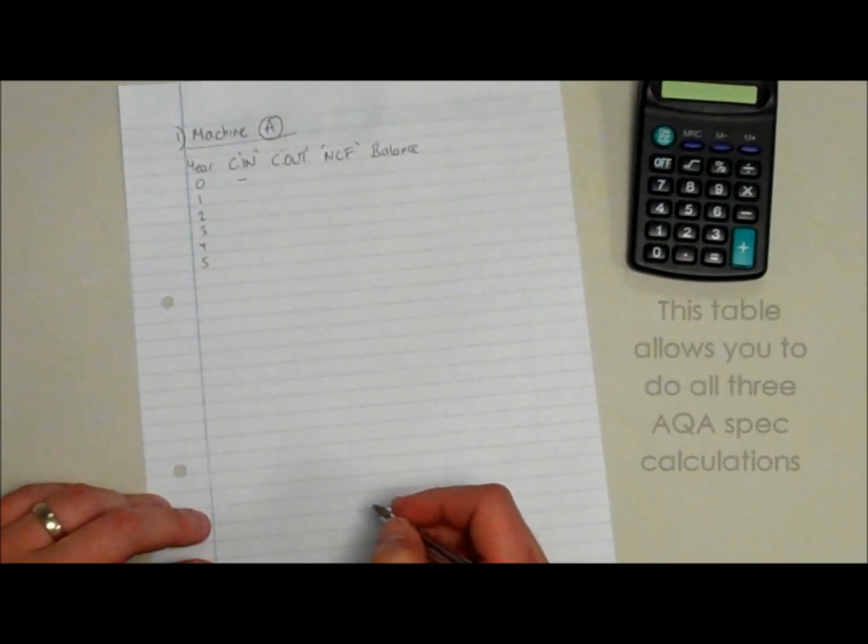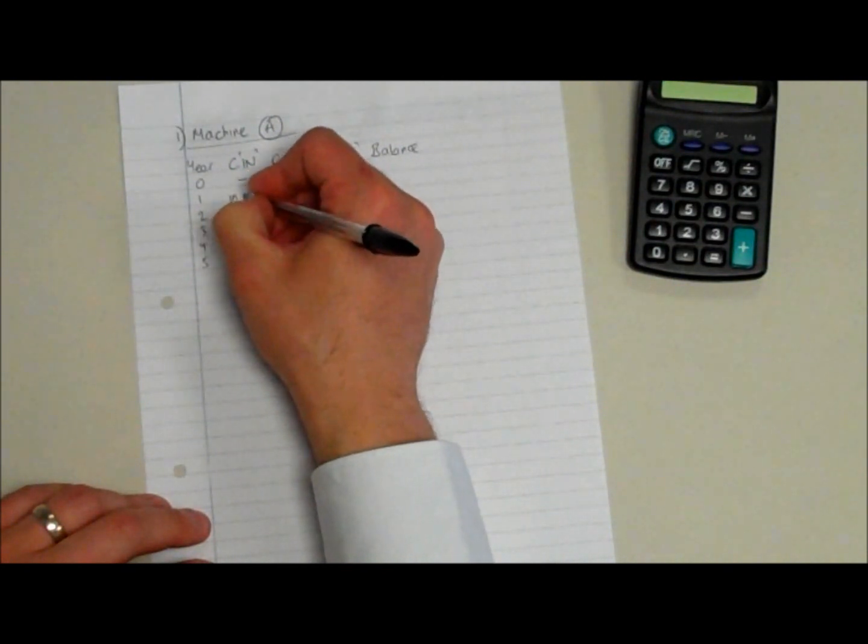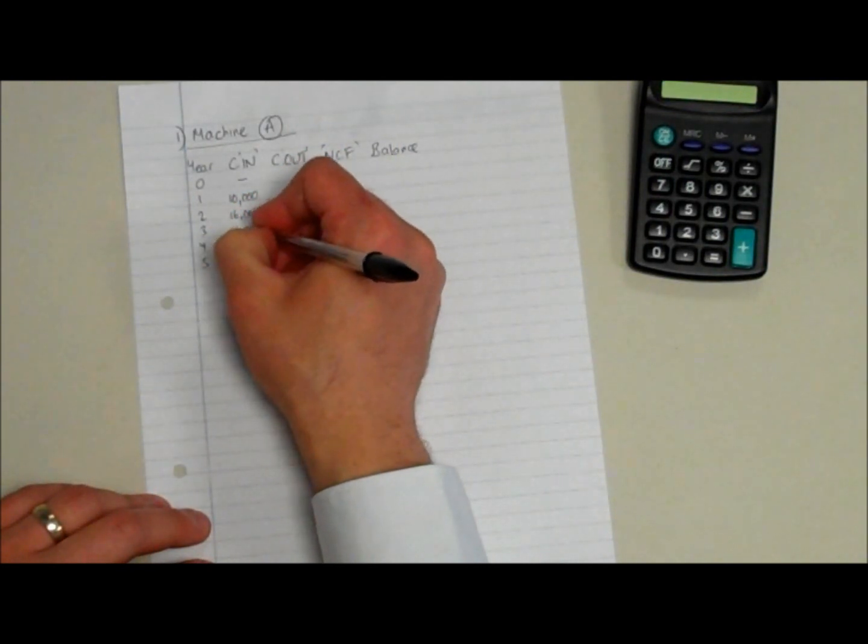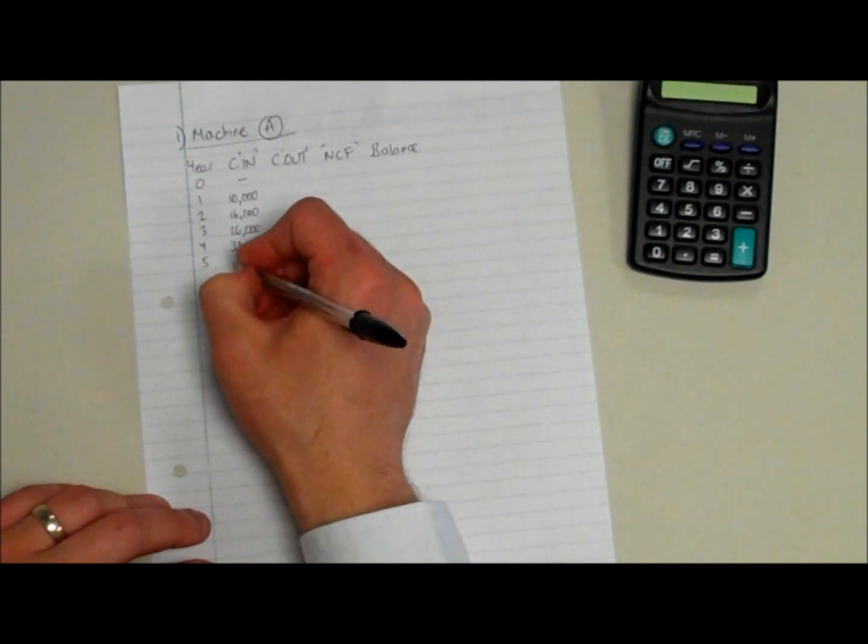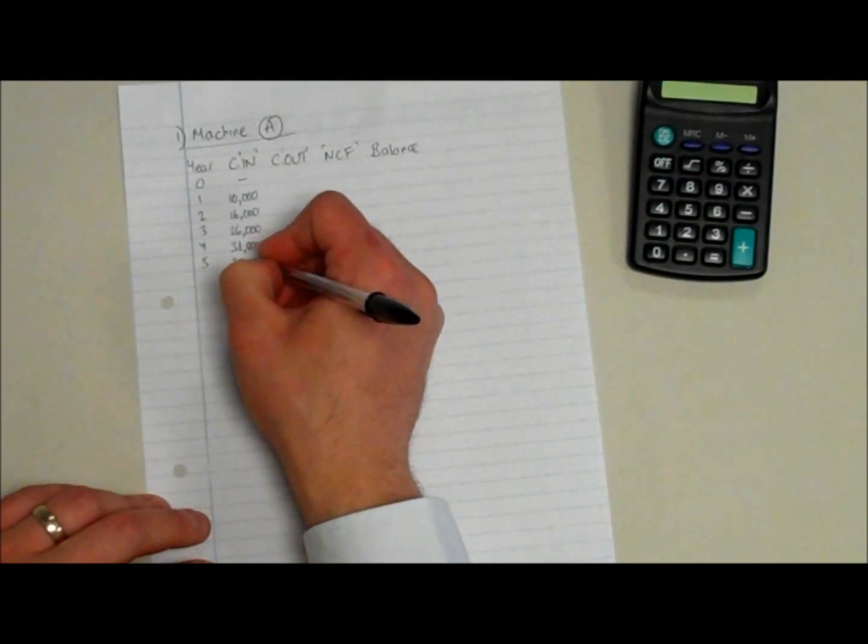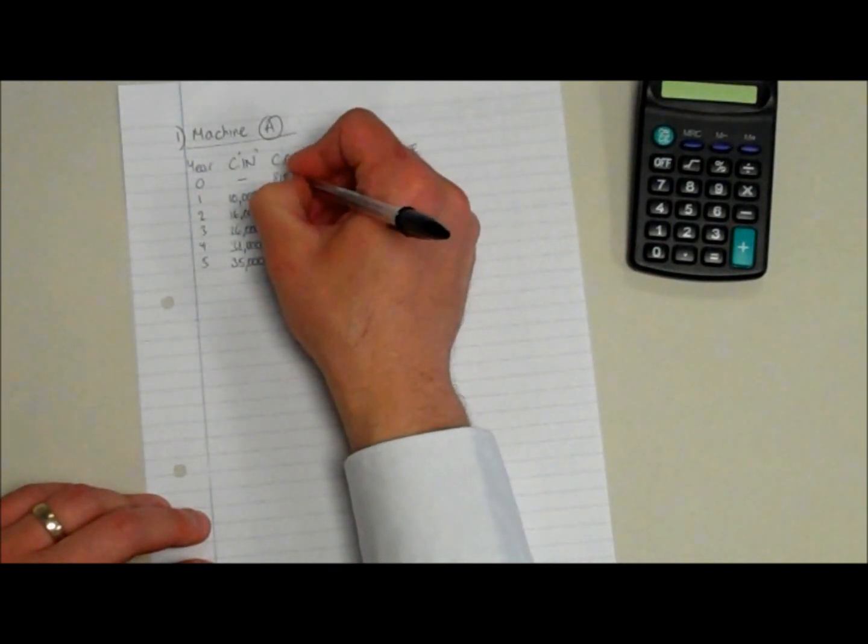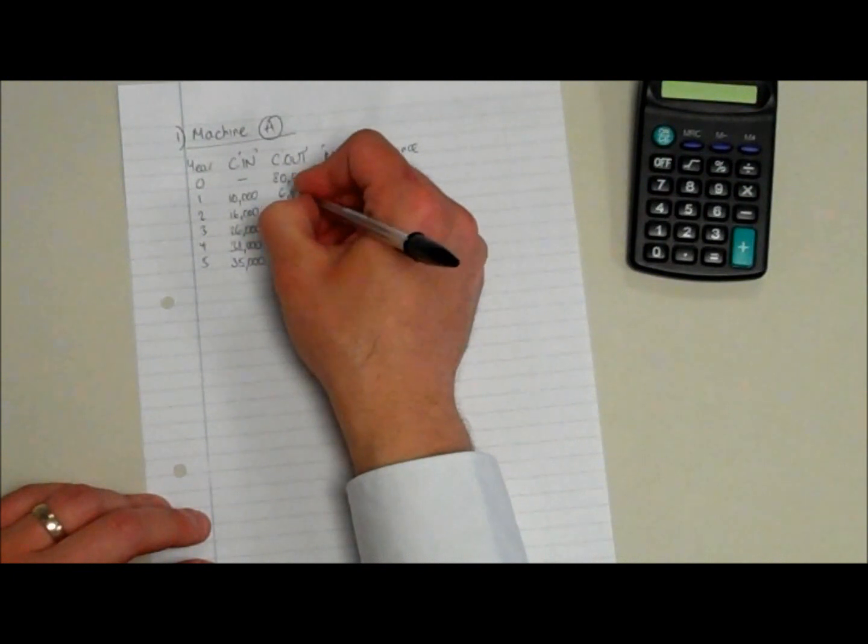Let's put the information in. We have no cash inflows in year zero. That's when we're investing in this piece of machinery. Year one, we have a cash inflow of £10,000. Year two, £16,000. Year three, £26,000. Year four, £38,000. And year five, £35,000. Now we don't have a cash inflow, but we do have a quite obvious cash outflow in year zero, our initial investment for machine A of £80,000.